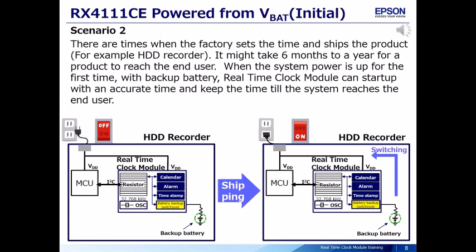Next, Scenario 2: There are times when the factory sets the time and ships the product, for example an HDD recorder. It might take 6 months to a year for a product to reach the end user.